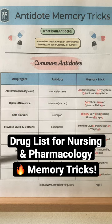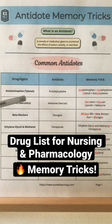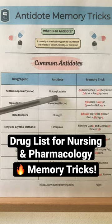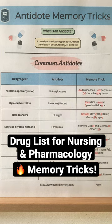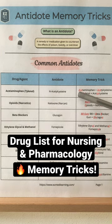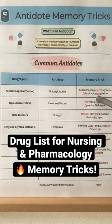First we have acetaminophen or Tylenol. The antidote is N-acetylcysteine. The way to remember that is acetaminophen and acetylcysteine both start with ACE. Or you can use the TYL in acetylcysteine to remember Tylenol.